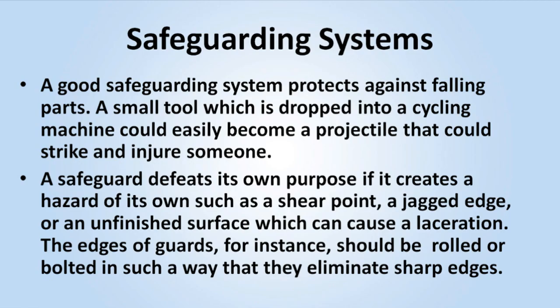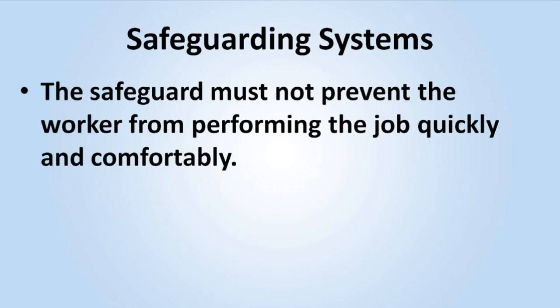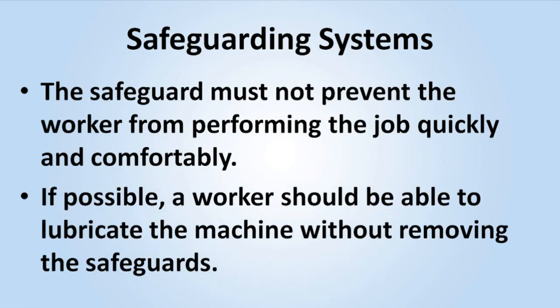A safeguard defeats its own purpose if it creates a hazard of its own, such as a shear point, a jagged edge, or an unfinished surface which can cause a laceration. The edges of guards, for instance, should be rolled or bolted in such a way that they eliminate sharp edges. The safeguard must not prevent the worker from performing the job quickly and comfortably. If possible, a worker should be able to lubricate the machine without removing the safeguards.